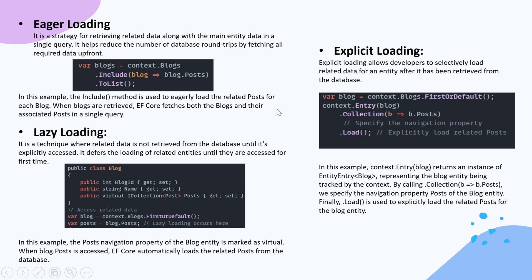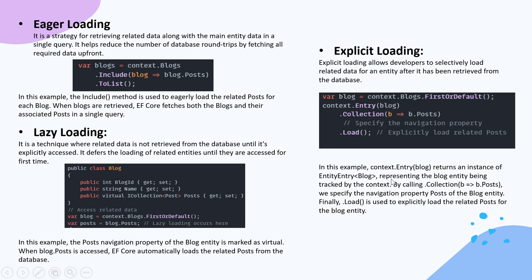Explicit loading allows developers to selectively load related data for an entity after it has been retrieved from the database. In this example, context.Entry(blog) returns an instance of EntityEntry representing the blog entity being tracked by the context. By calling .Collection(b => b.Posts), we specify the Posts navigation property of the Blog entity. Finally, the .Load() method is used to explicitly load the related posts for the blog entity.